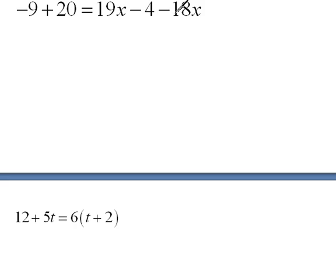Now we have another problem. We have -9 + 20 = 19x - 4 - 18x. Well, hopefully you recognize that we have some common terms. We need to gather those up first. So that will be 11 equals 19x and negative 18x is a positive 1x minus 4.